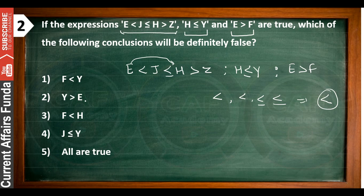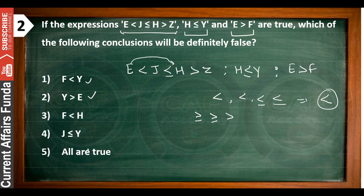Definitely false — the expressions are 100% true; now we have to find which one is definitely false. Check: F is less than Y. Going from F to E I get lesser, then E to H gives lesser or equals to, then H to Y gives lesser or equals to — highest precedence among these is lesser. So F is less than Y is true — that means this conclusion is not definitely false. Next, check Y is greater than E: going from Y to H gives greater or equal, and H to J to E gives the path — those two are true.